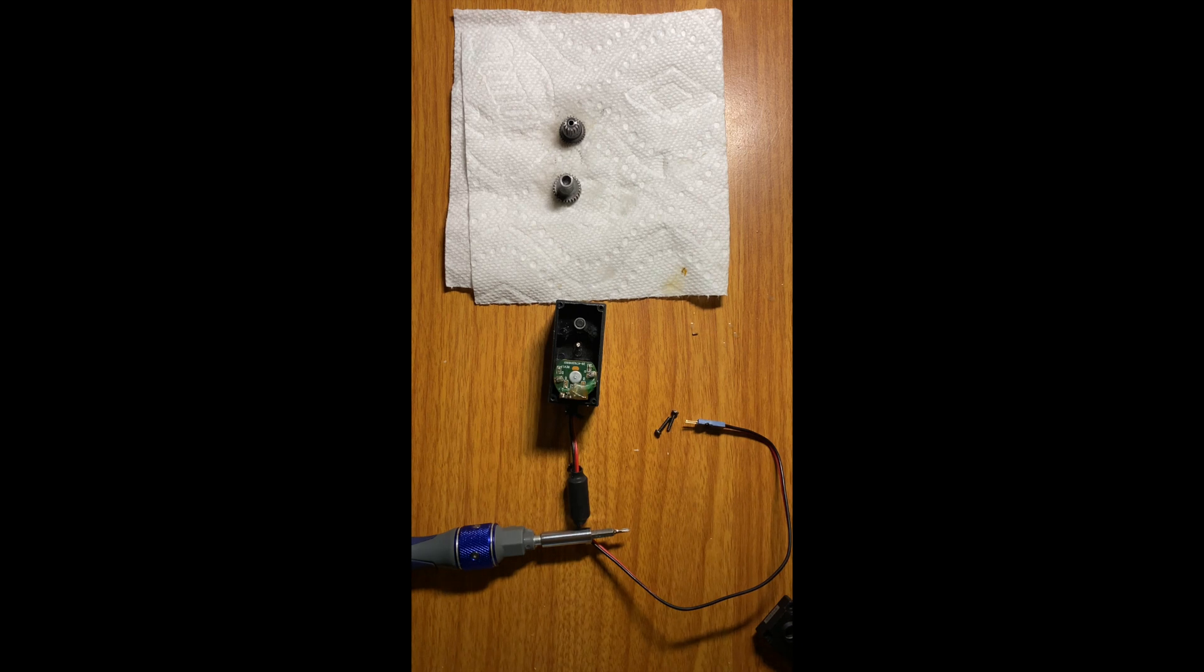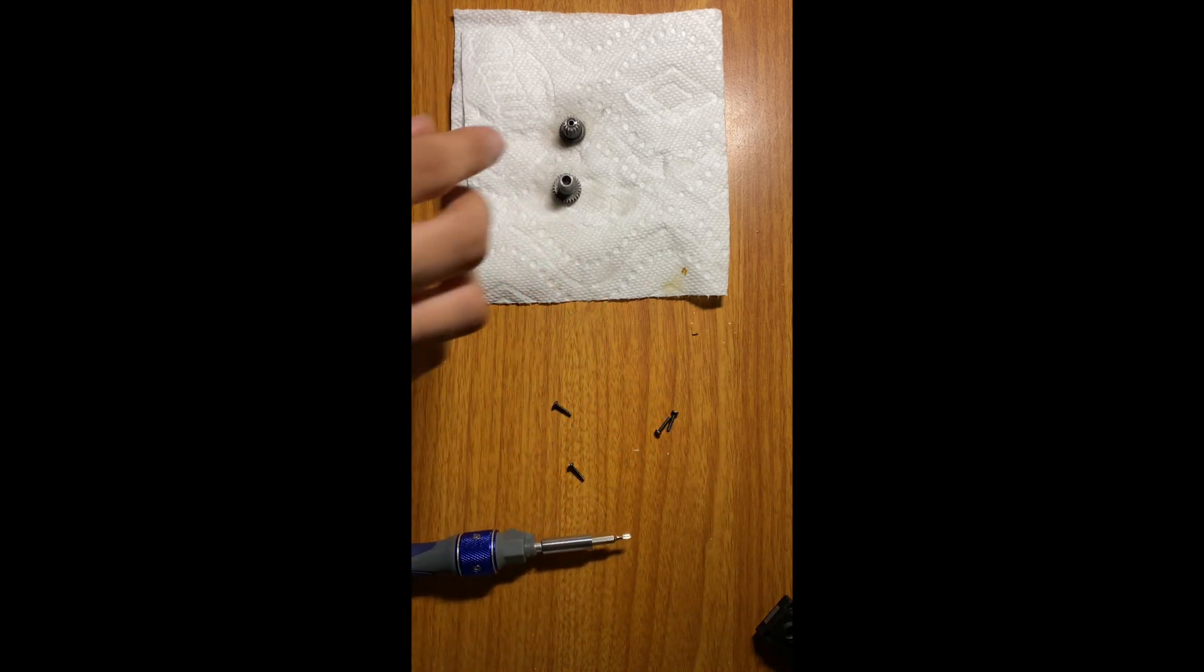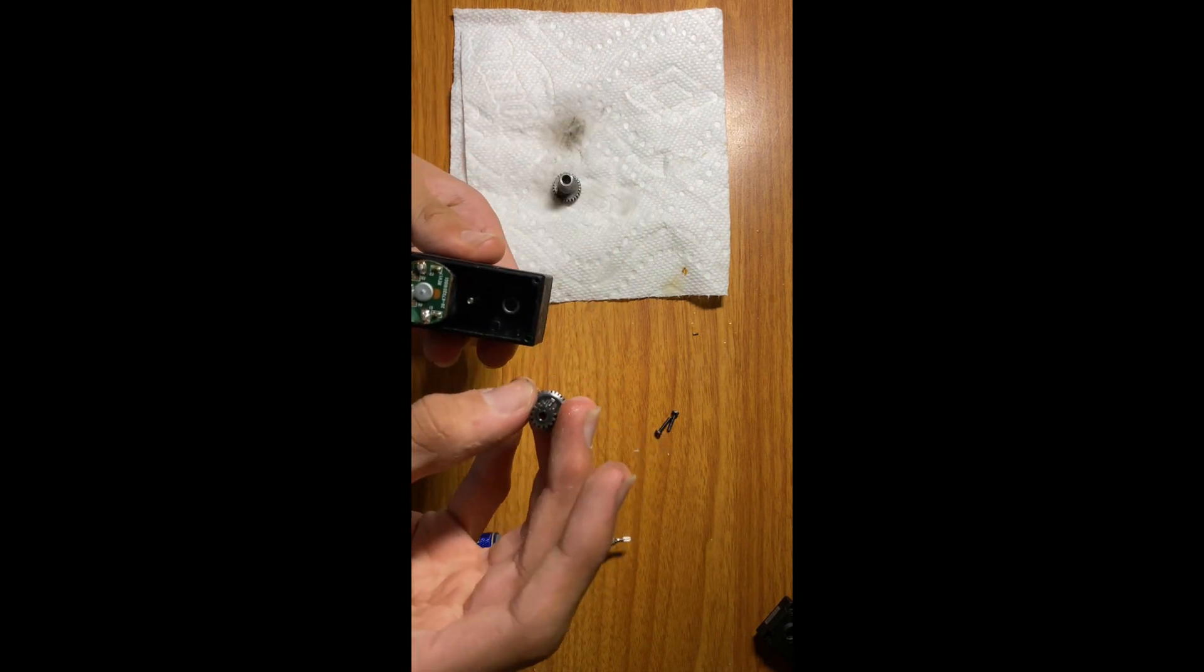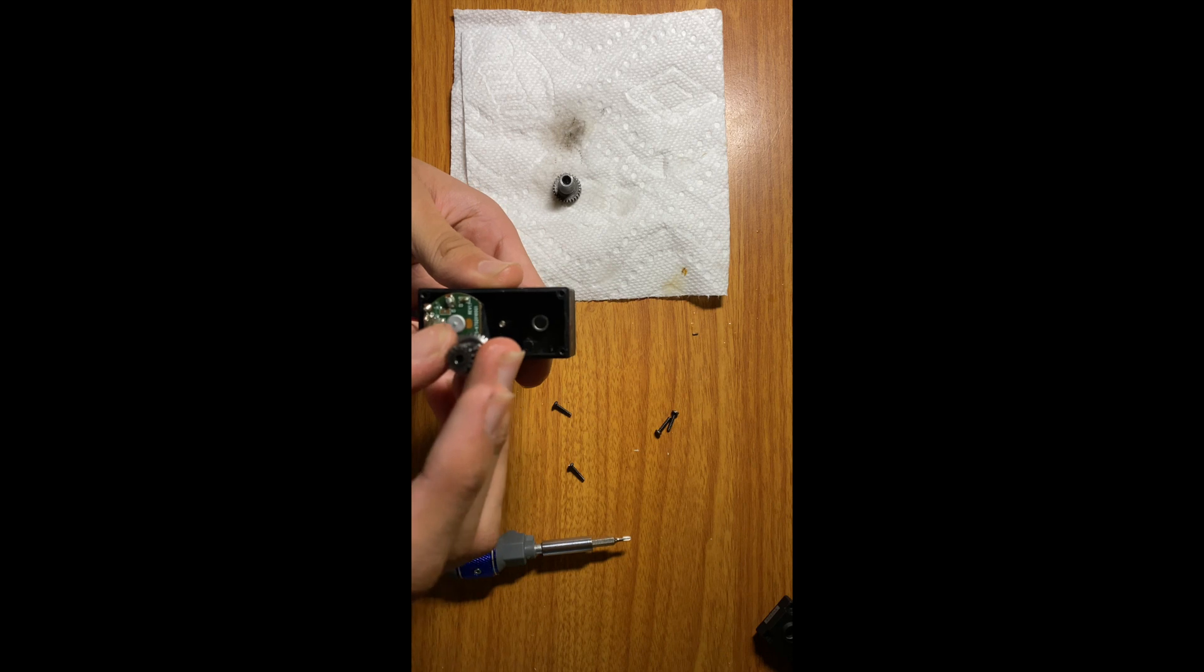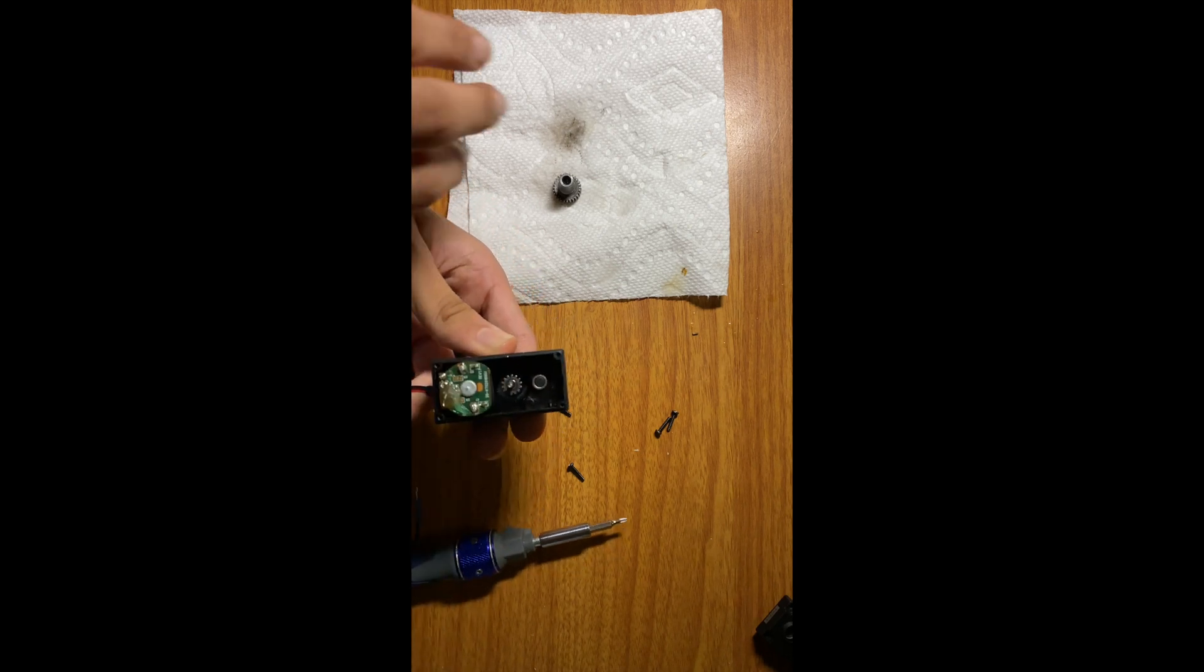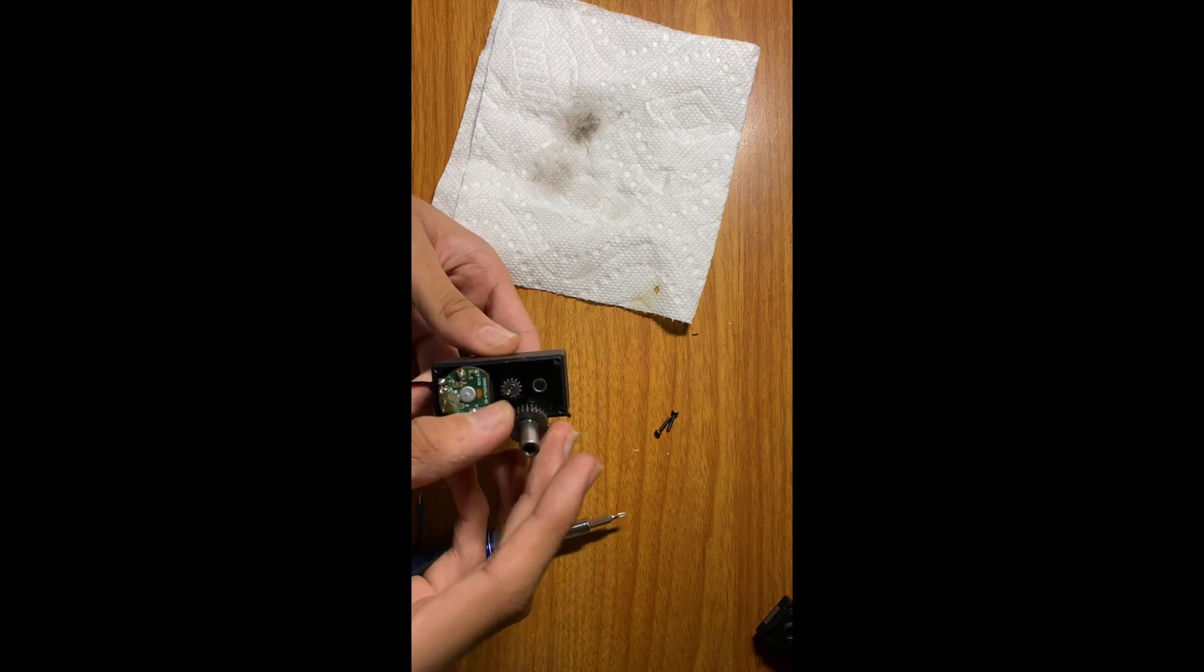That's enough. Now we're going to do everything in reverse order and put the new gears back in. The order they go in is: take the smaller one and put it inside the one with the pin, then take the bigger one with the shaft hole and put it right beside it.